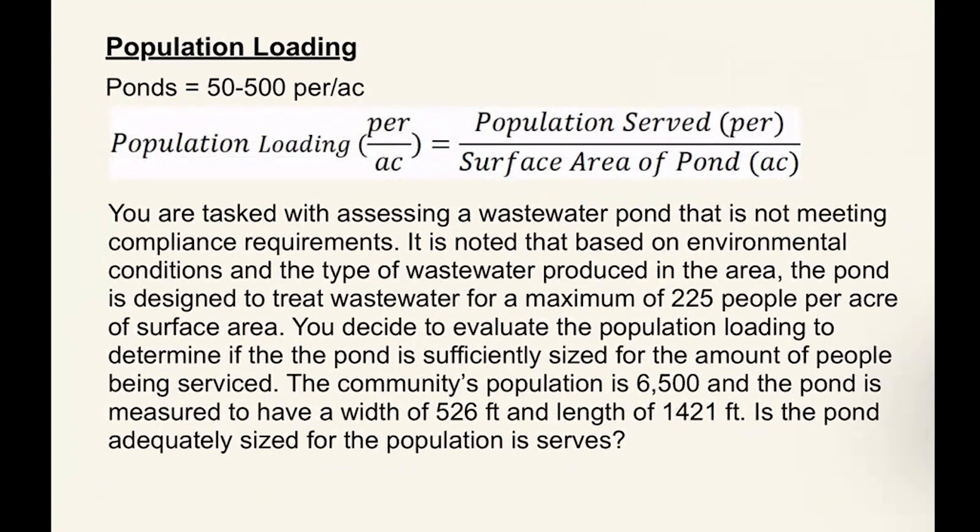The next topic we're going to talk about is population loading. This is typically important for treatment processes like ponds, which have a limit to the amount of people that can be treated by the treatment process and the area that it has available. Typical design parameters for a pond are between 50 and 500 persons per acre. This can be calculated by simply dividing the amount of population that's being served over the surface area of the available pond treatment.